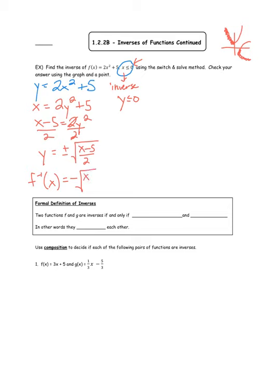So our inverse function is f⁻¹(x) = −√((x−5)/2). If it had said x ≥ 0 we would pick the positive root. For part two, checking using the graph: you'd type the original function and the new inverse function into a calculator. The graphs would reflect over y = x, with only the restricted portions shown. It's hard on a calculator to graph just the left side of 2x² + 5, but that's what it would look like.